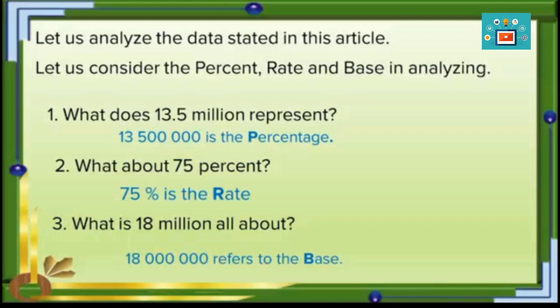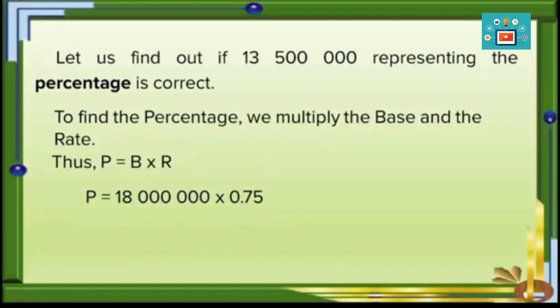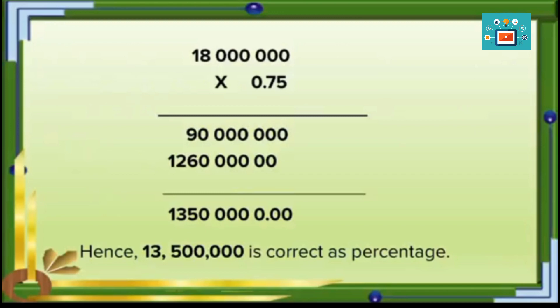13.5 million, or 13 million 500 thousand, is the percentage — that's correct. 75% is the rate. And 18 million is the base. To find the percentage, we multiply the base and the rate: P equals base times rate. So the percentage equals 18 million times 75%, or 0.75. Multiplying: 18 million times 0.75 — computing step by step gives us the product 1 billion 350 million.